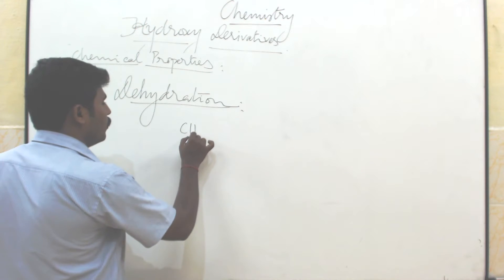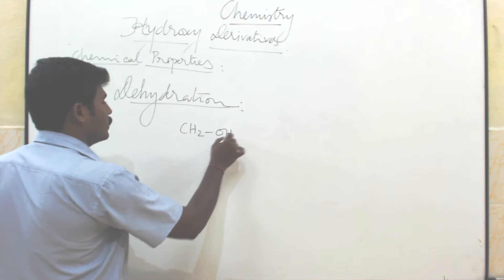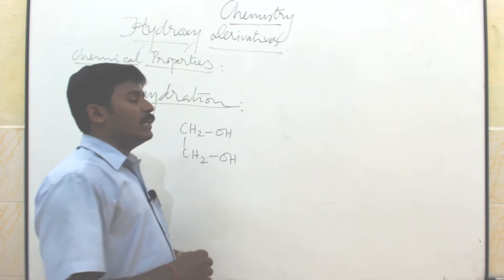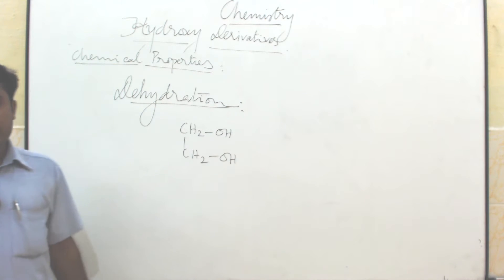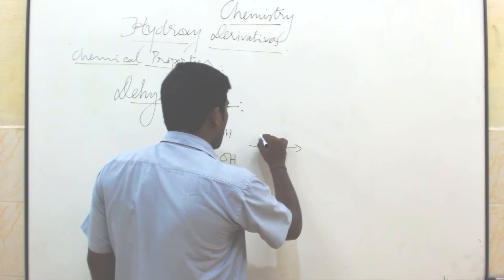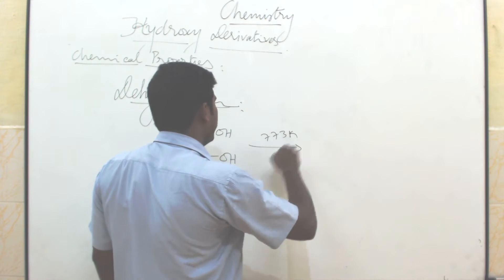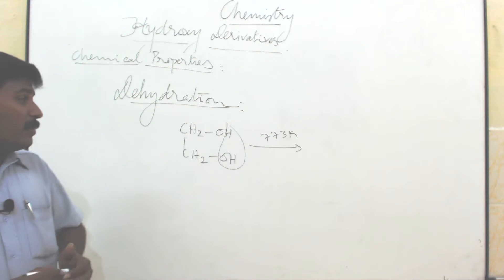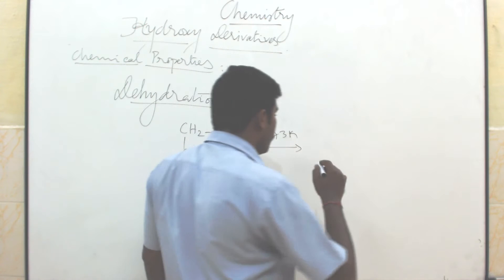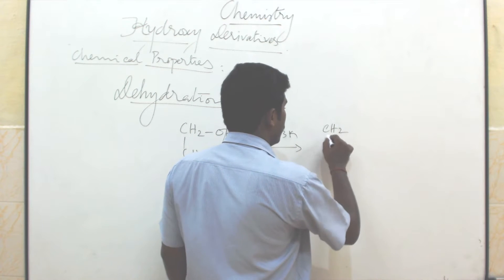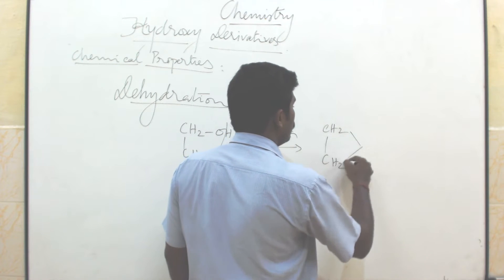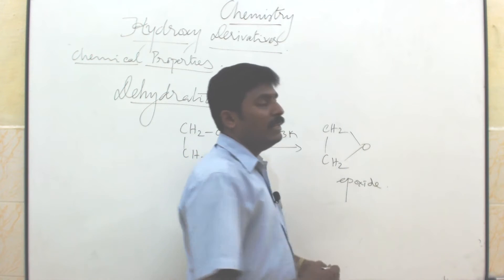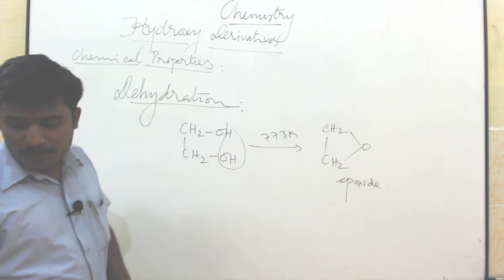Ethylene glycol has the formula CH2OH-CH2OH. When we heat ethylene glycol at 773 Kelvin, one water molecule is removed. Only one O is remaining, and ethylene epoxide will form — CH2 bonded to O — which is ethylene epoxide.